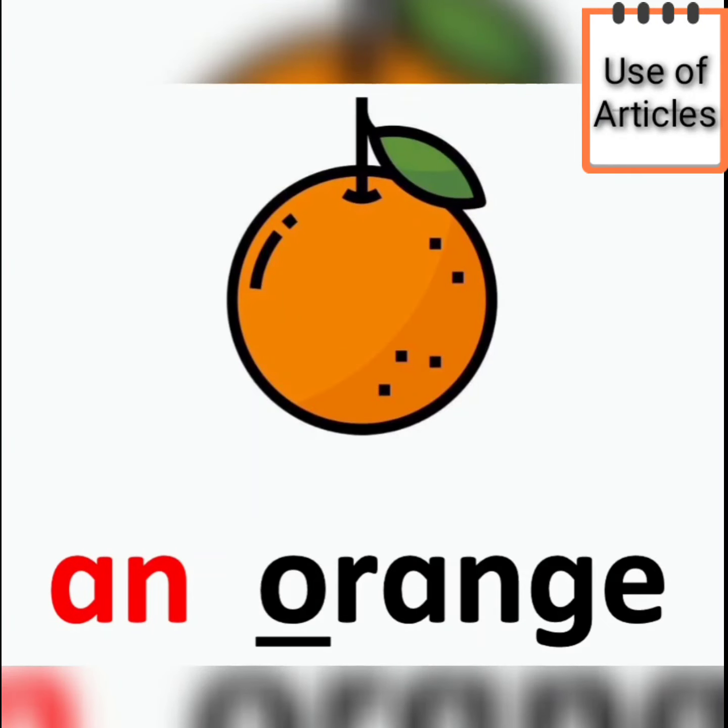An orange. Now, children, the word is starting with vowel O. So, we will use an. As you know, vowel's friend is an. So, we will say an orange.